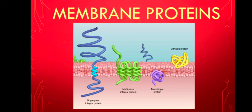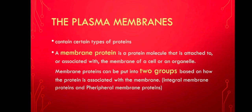Now let us talk about membrane proteins. The plasma membrane contains molecules other than phospholipids — primarily lipids and proteins. The green molecules in the figure are an example of the lipid cholesterol. Molecules of cholesterol help the plasma membrane keep its shape. Many of the proteins in the plasma membrane assist other substances in crossing the membrane. A membrane protein is a protein molecule that is attached to or associated with the membrane of a cell or an organelle. Membrane proteins can be put into two groups: integral membrane proteins and peripheral membrane proteins.